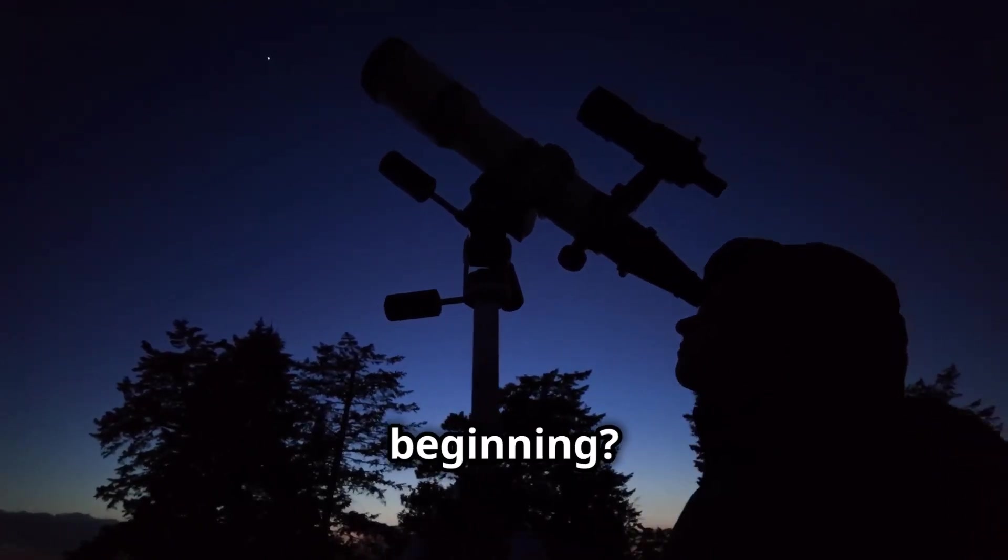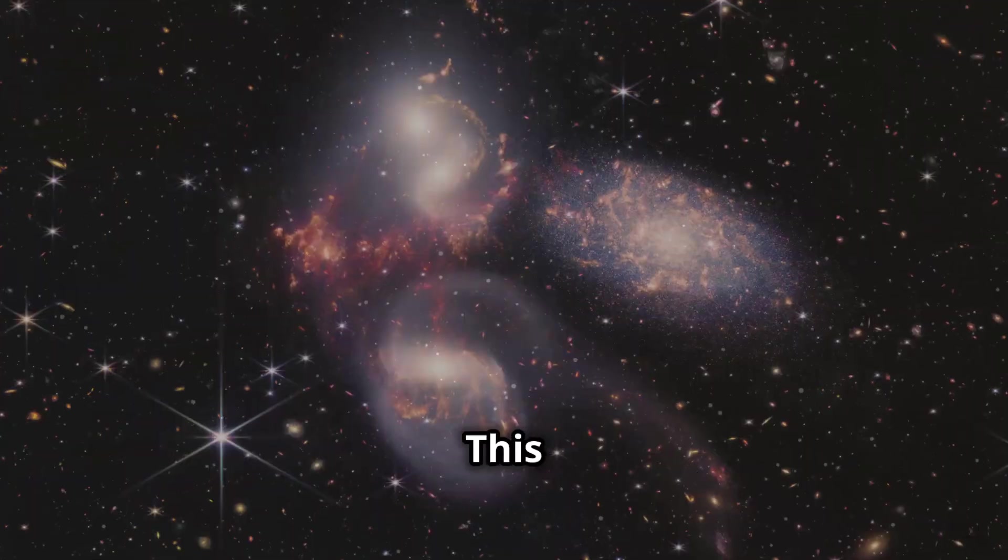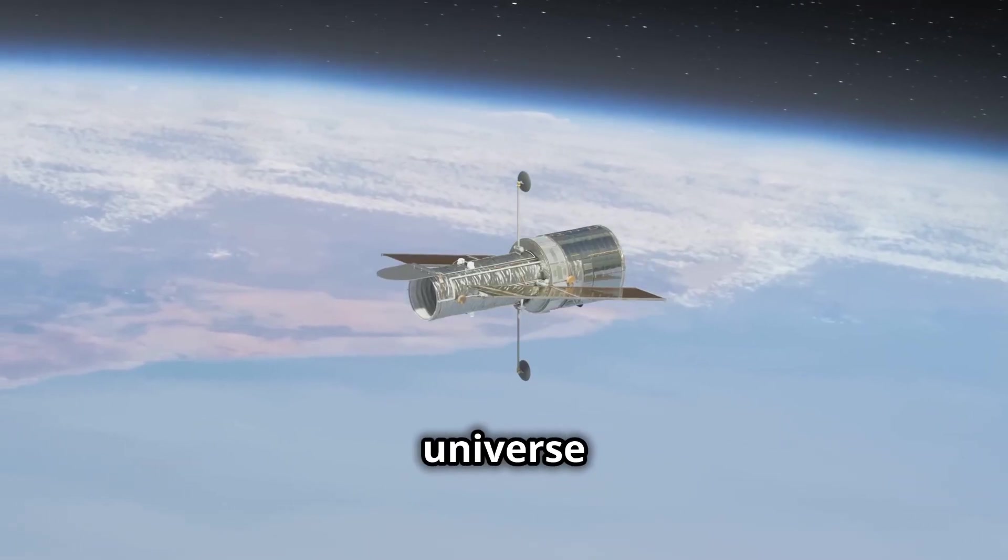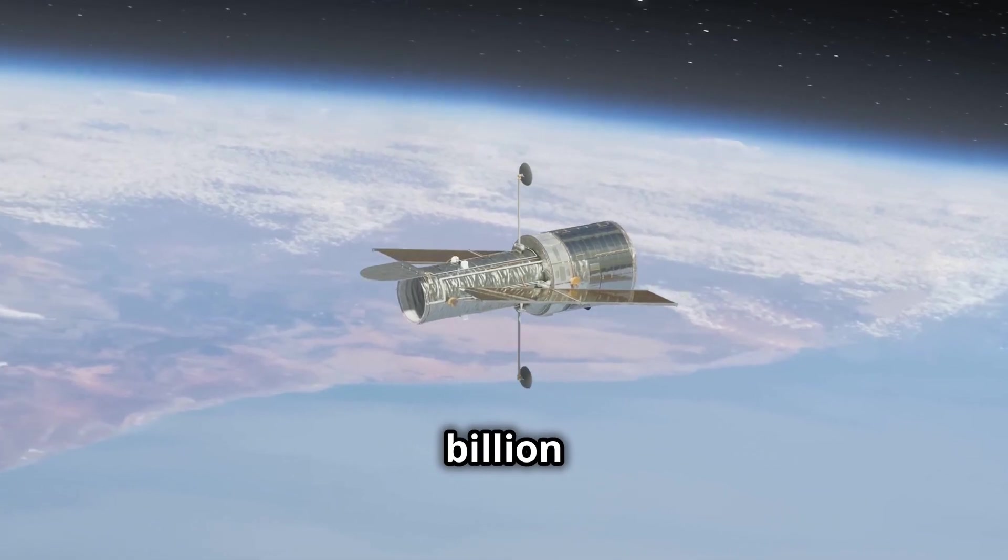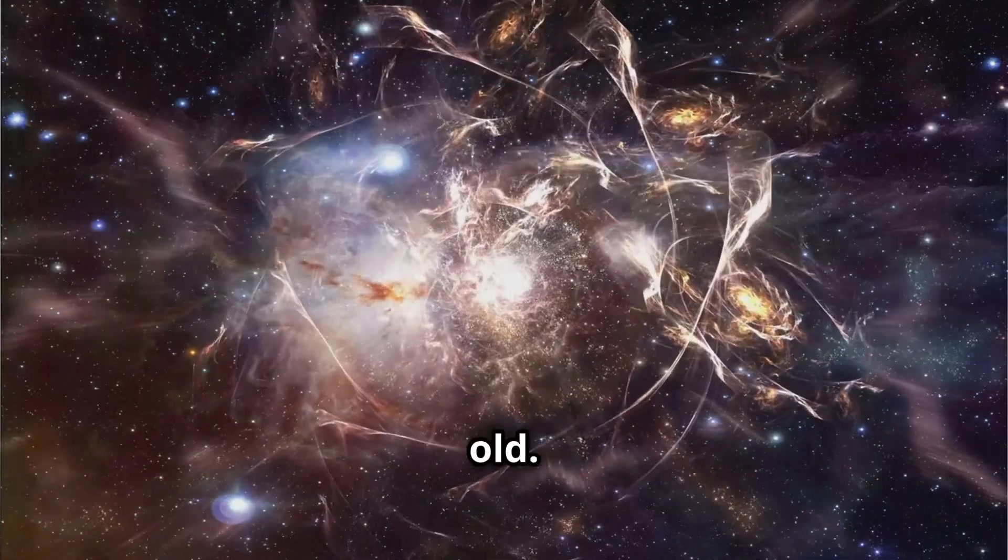How do we know the universe had a beginning? The universe is expanding like galaxies moving apart. This is called the Hubble expansion, named after Edwin Hubble. The universe is about 13.8 billion years old. Earth is only 4.5 billion years old.